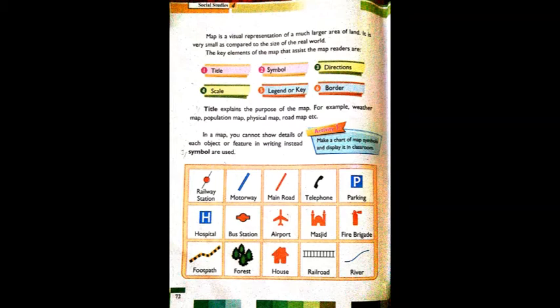The key elements on a map that assist the map reader are - there are total six: title, symbol, directions, scale, legend/key and border. Number one is title. The title explains the purpose of the map. The title tells you what the map is about and what its purpose is. Without a title you wouldn't know what the map represents. The title tells you what the map is and why it was made - for example, a weather map, population map, physical map or road map.